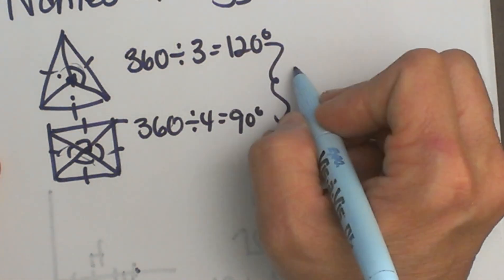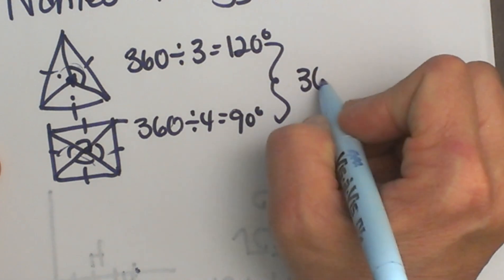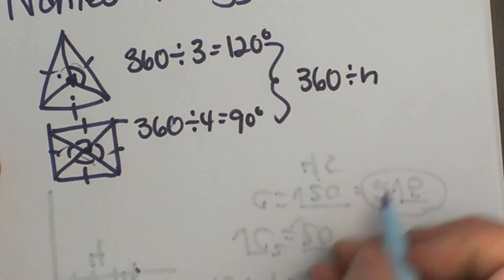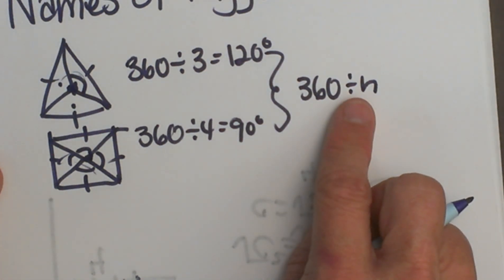So what's the basic formula for that? It's just 360 divided by n, where n is the number of sides of the polygon, and that's how you find central angles.